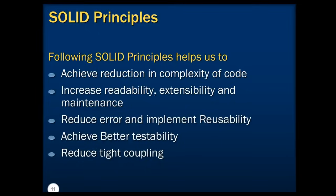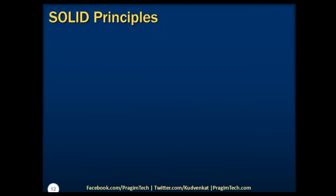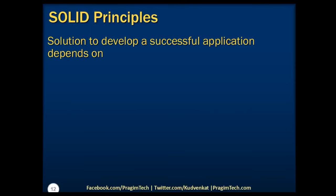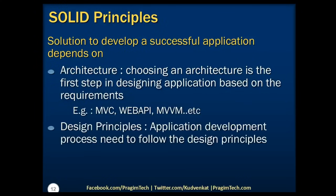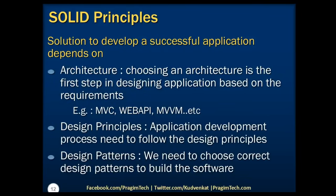Hence, we can say that the solution to develop a successful application depends on three factors. One is the architecture — choosing an architecture is the first step in designing an application based on the requirements. Number two is design principles — the application development process needs to follow these design principles to make the application robust and performant. Number three is design patterns — we need to choose correct design patterns to build the software.